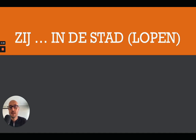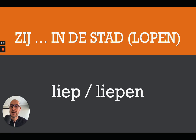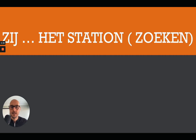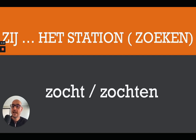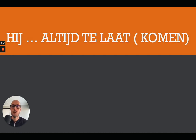Next: zij [blank] in de stad, and the verb is lopen. Note that zij can mean she or they, so both zij liep and zij liepen in de stad are correct. Then: zij [blank] het station, and the verb is zoeken. The answer is zij zocht or zij zochten het station.